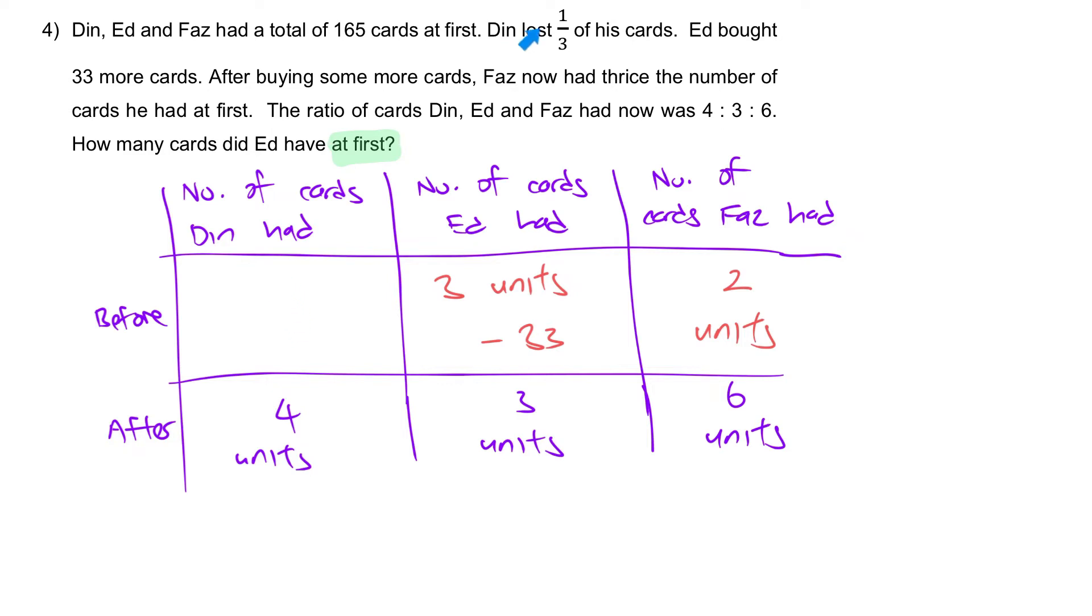Moving back to Dean. Dean lost 1 third of his card. After losing 1 third of his card, he had 4 units left. So, we can change this to the equivalent fraction 2 out of 6. Now, it makes sense. Initially, he had 6 units. After losing 2 units, he left with 4. Hence, at the beginning, he had 6 units.